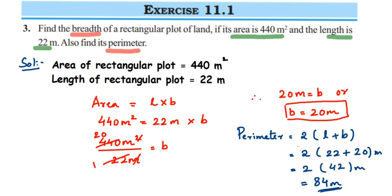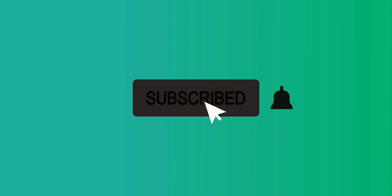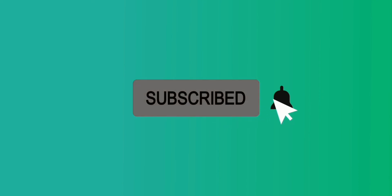So this is how we find the answer — first find the breadth and then the perimeter. I hope this is clear. In case you have other questions or doubts, you can drop a comment below. Thank you so much for watching.